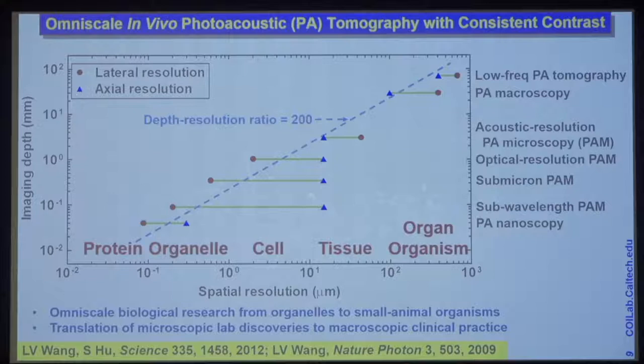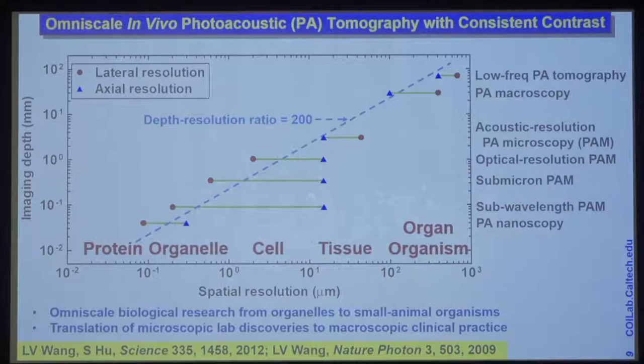Plotting imaging depth versus spatial resolution, you can see a dashed line which connects all the different implementations. You can scale — depending on the application, you pick a depth and then design the system to best match the preferred resolution and depth. Each horizontal bar represents one implementation, and there are many more than I can plot here. We'll go through some of them to give you a flavor of the technology's capability.